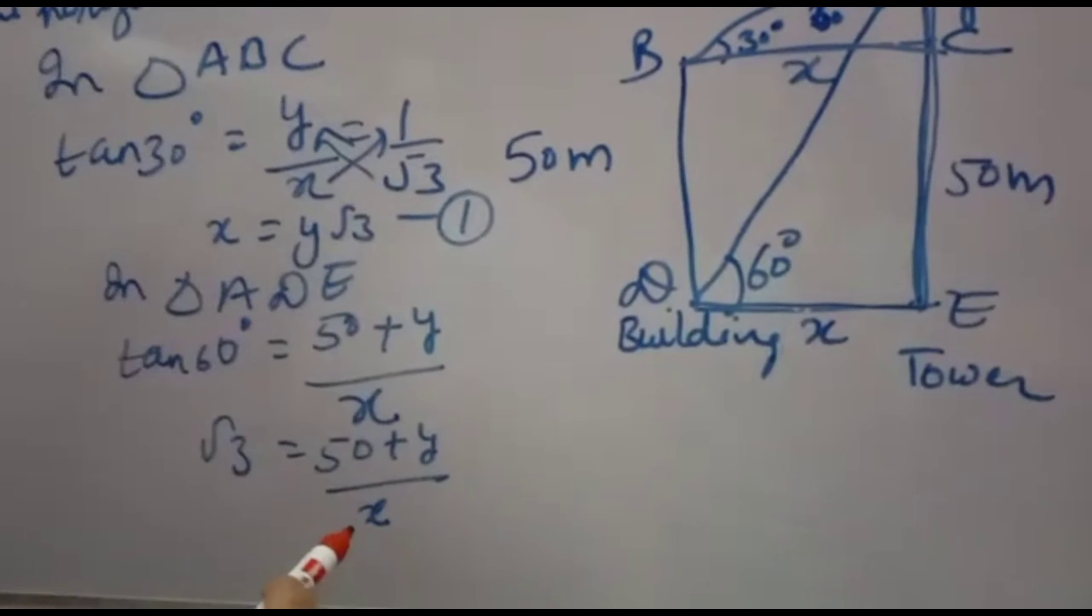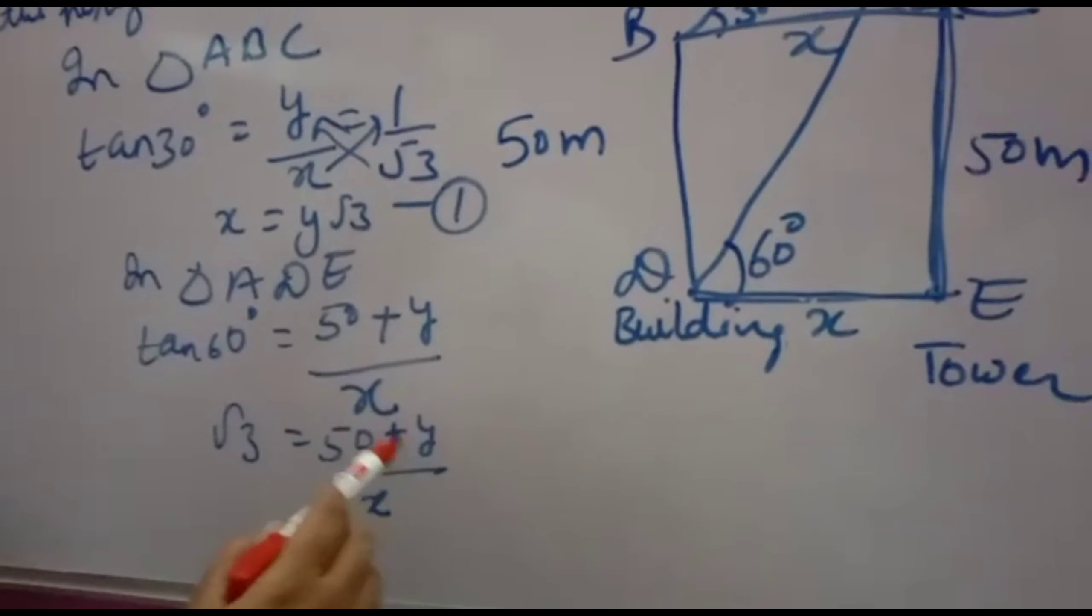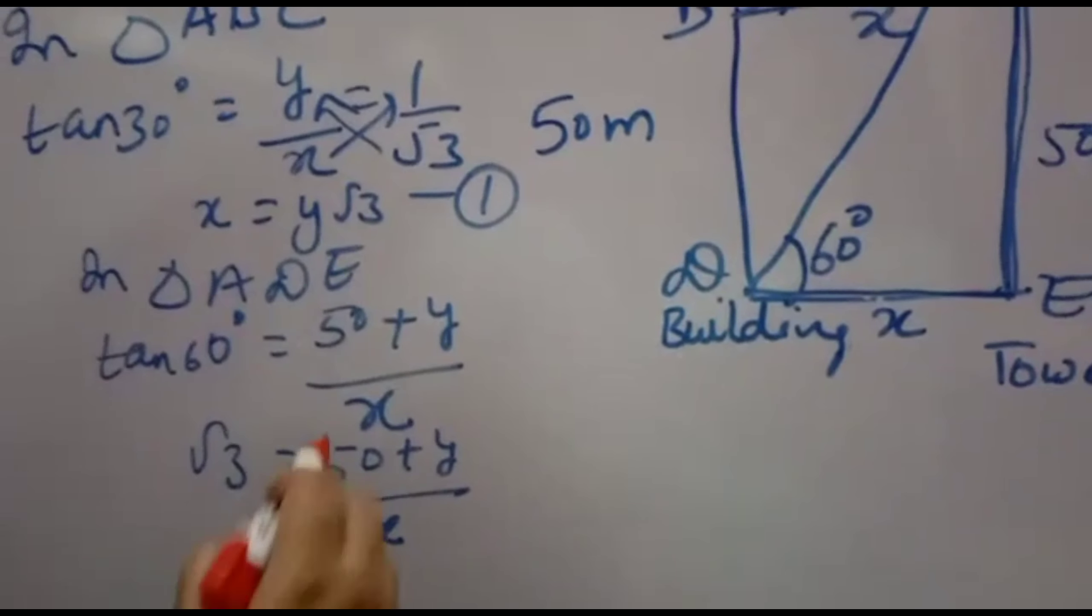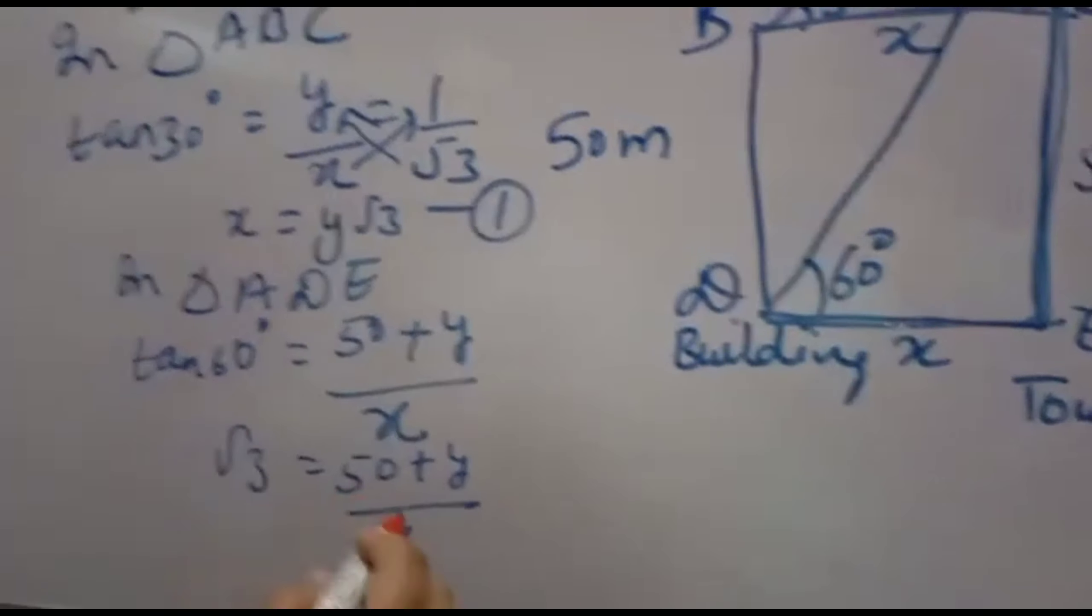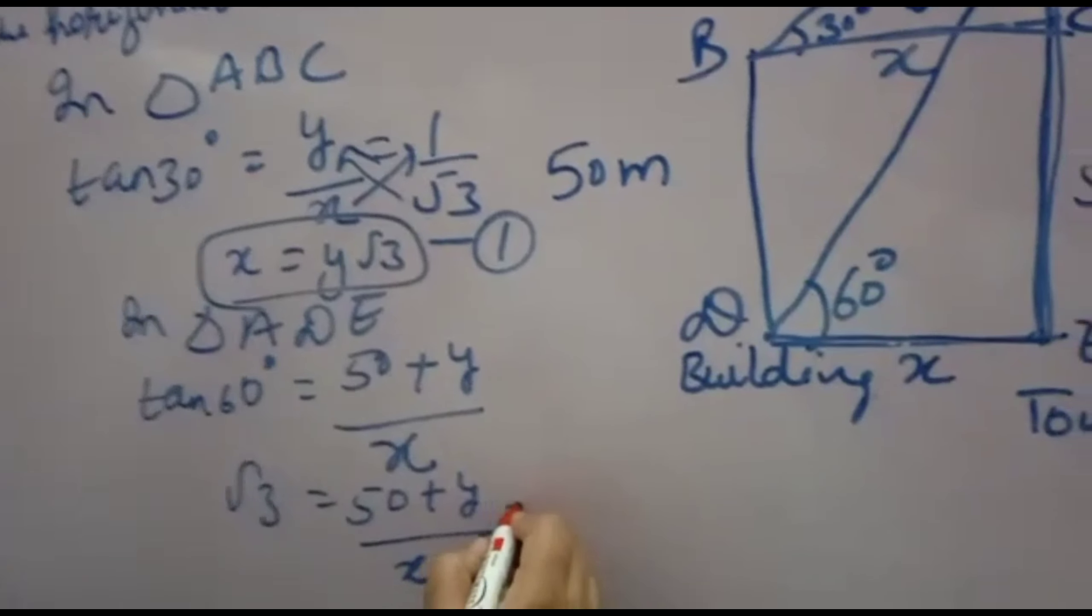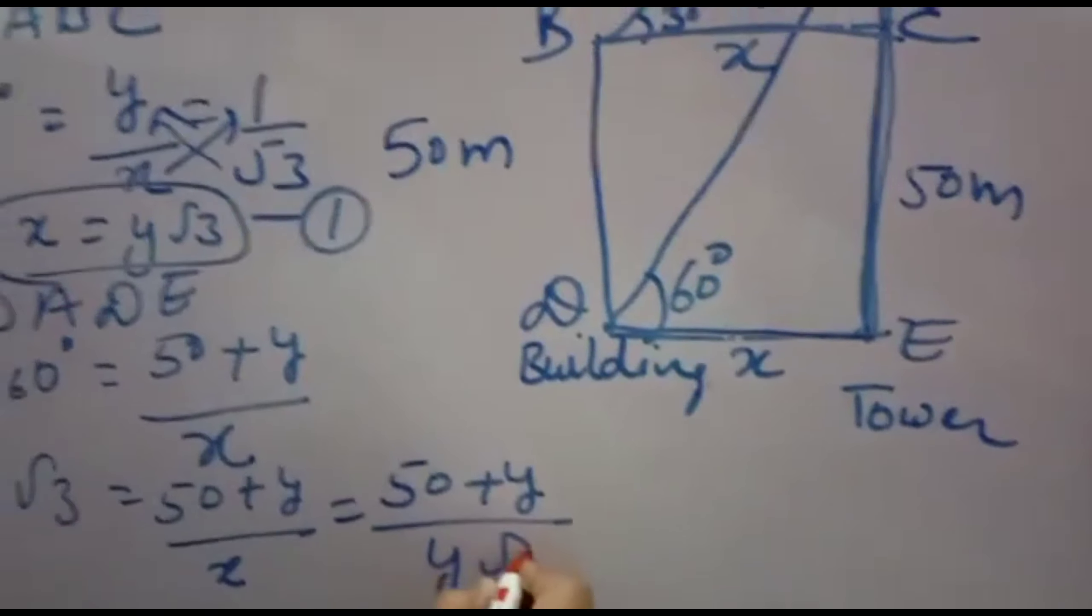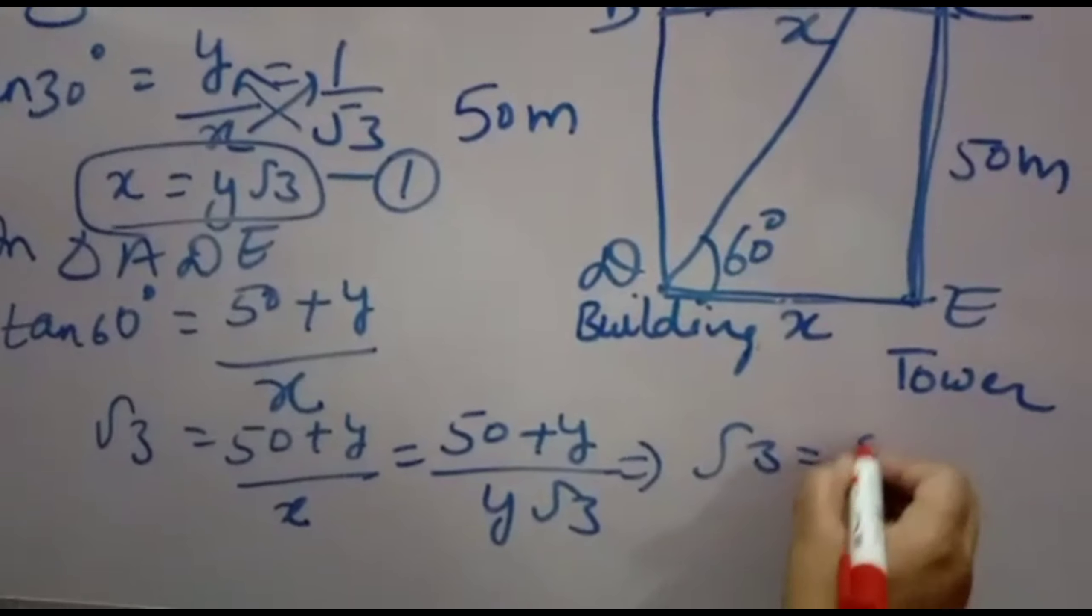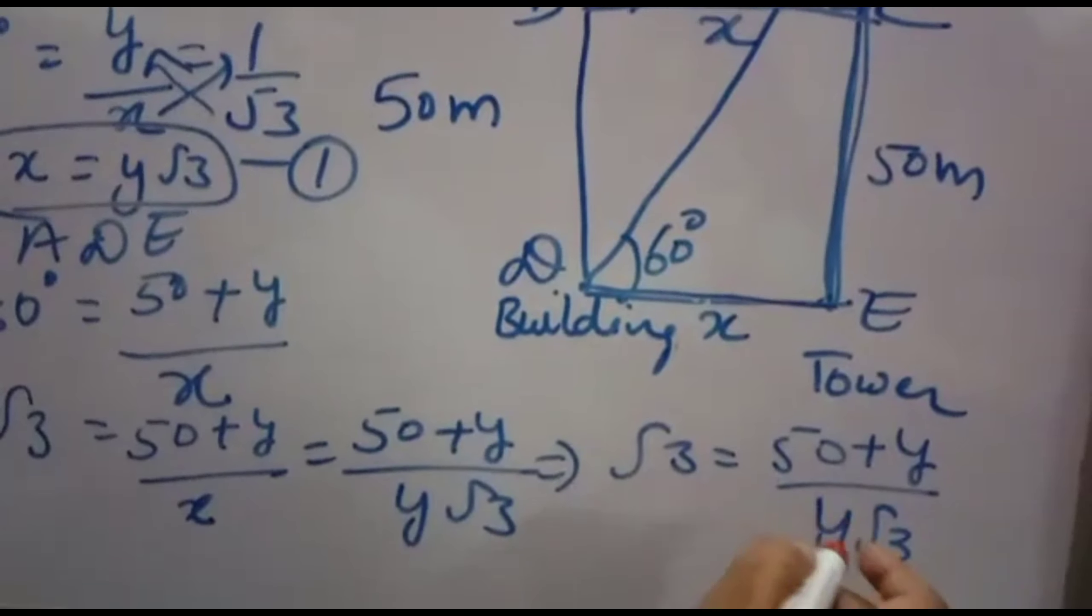Now if you want x value, you can substitute y value. If you want y value firstly, you will substitute x value. Both you have to calculate. But you can firstly substitute the value so that you will get the equation in one variable and you can solve. So put x is equal to y root 3 in this equation. You will get 50 plus y. x you will write y root 3. You will get root 3 is equal to 50 plus y over y root 3. So up to here you note down.